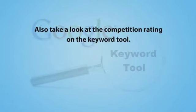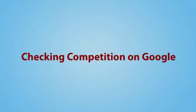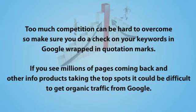Also, take a look at the competition rating on the keyword tool. If there is a high amount of competition, that means there is more likely profit to be made, because people wouldn't be spending money on AdWords if they weren't turning a profit. Number two, checking competition on Google. Too much competition can be hard to overcome, so make sure you check your keywords in Google wrapped in quotation marks. If you see millions of pages coming back and other info products taking the top spots, it could be difficult to get organic traffic from Google.